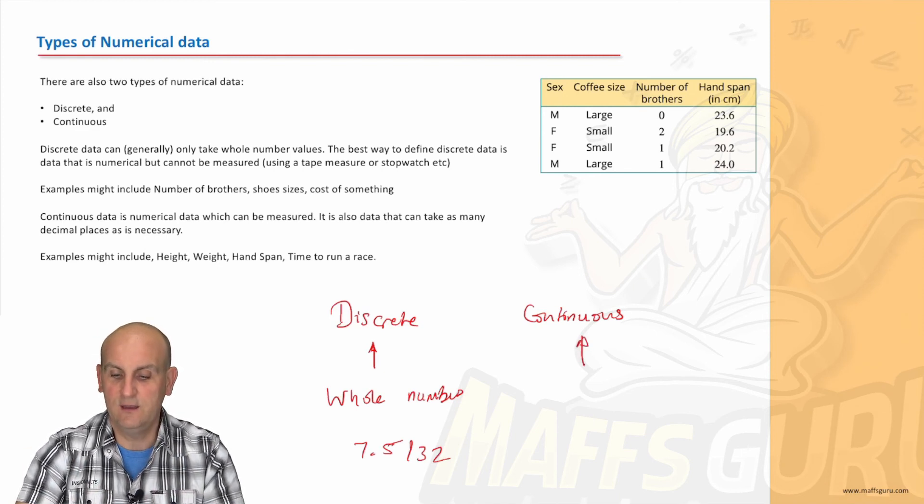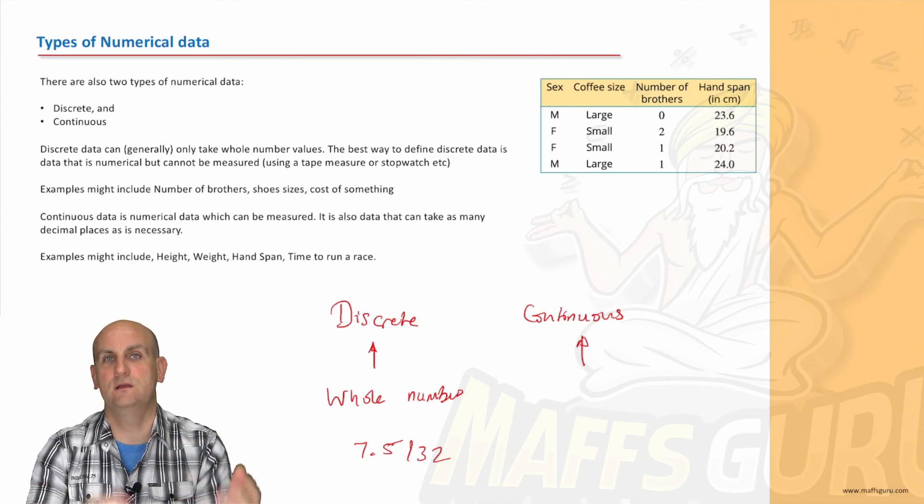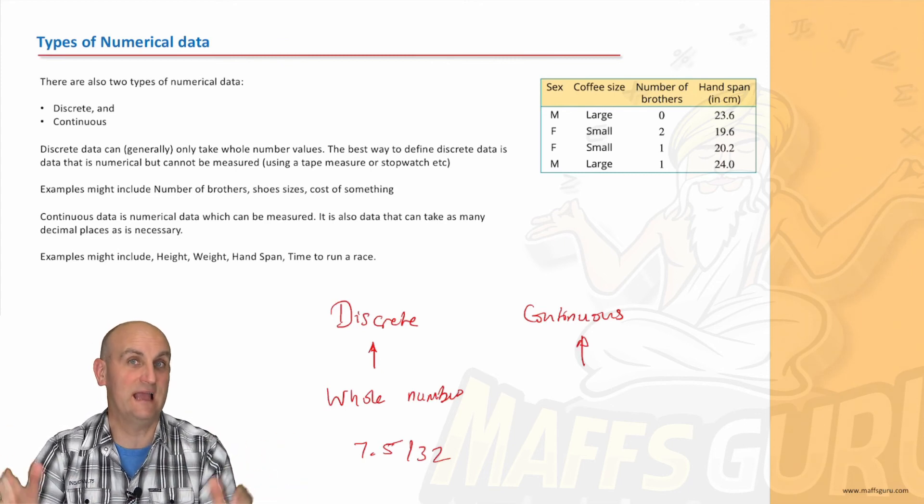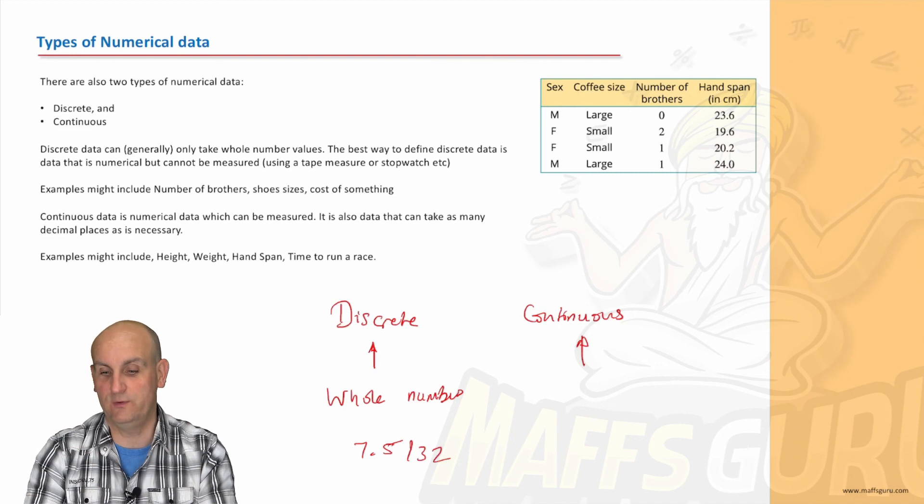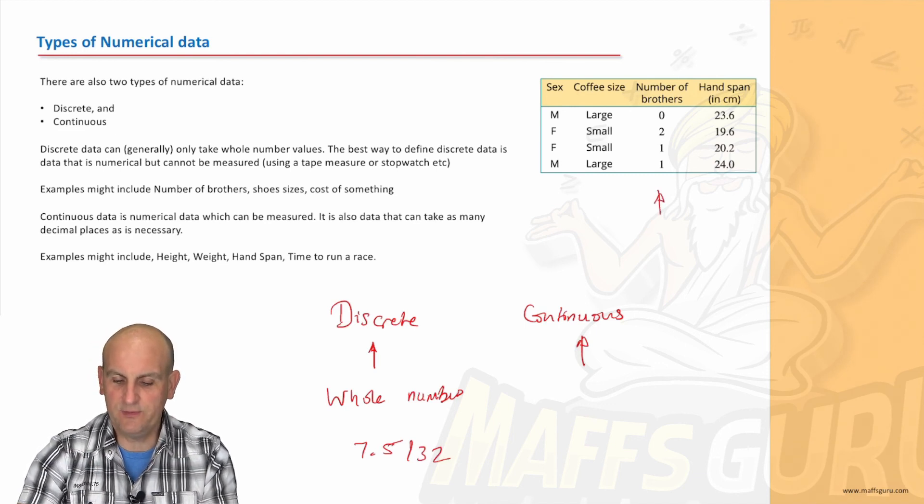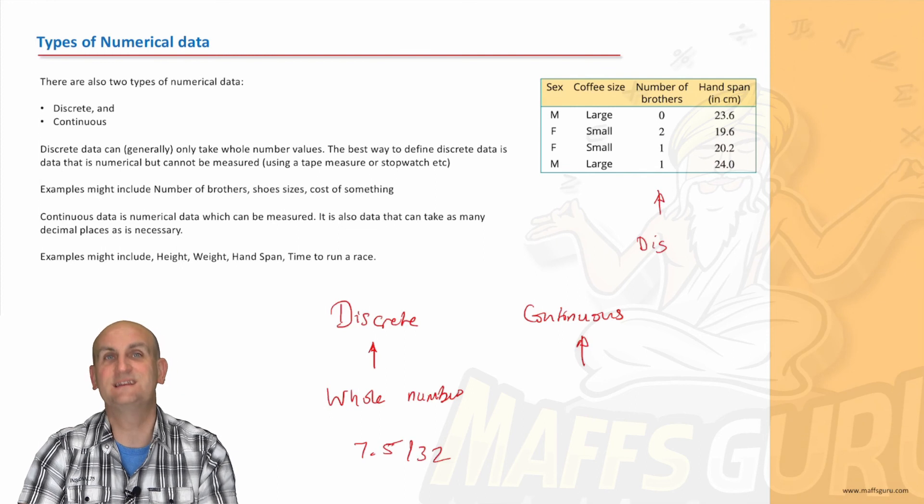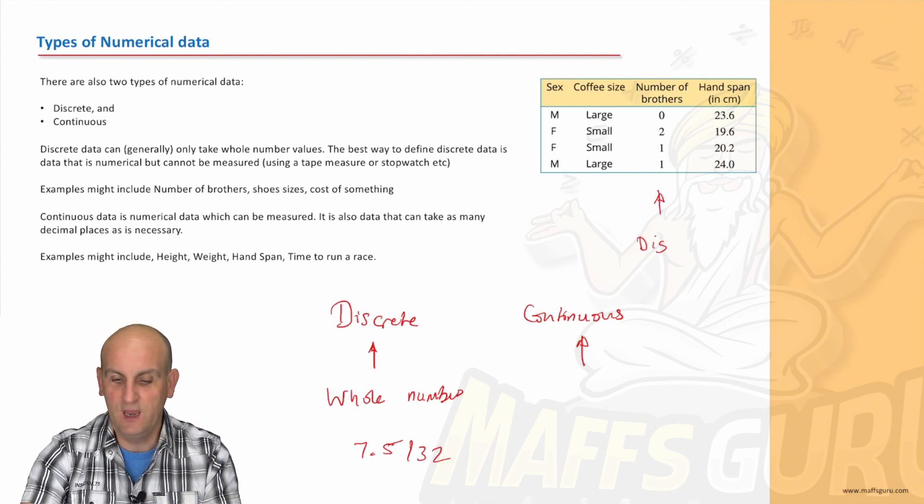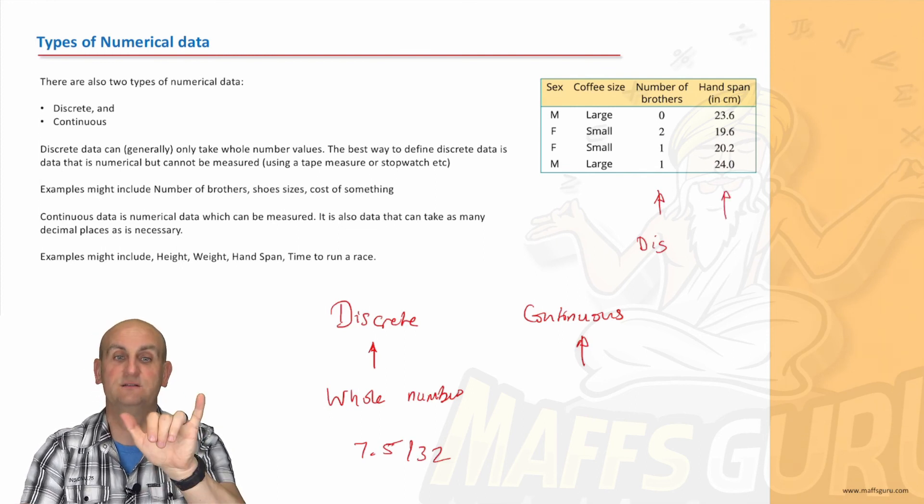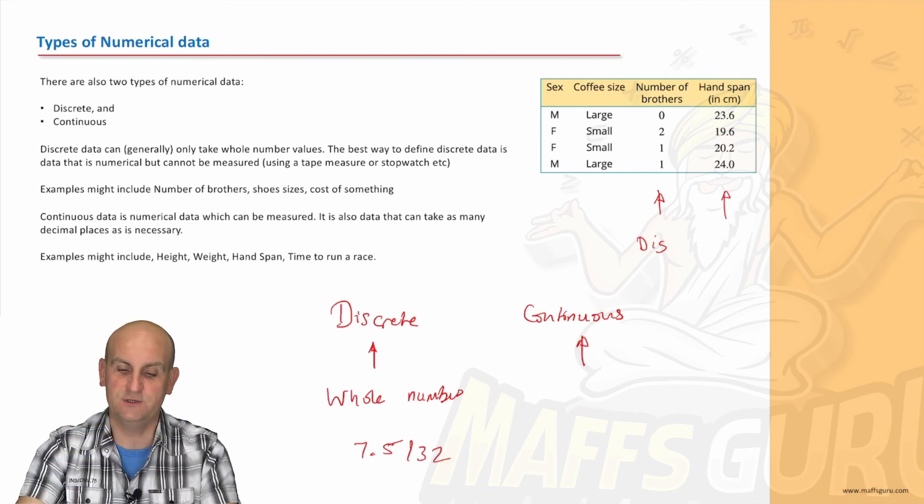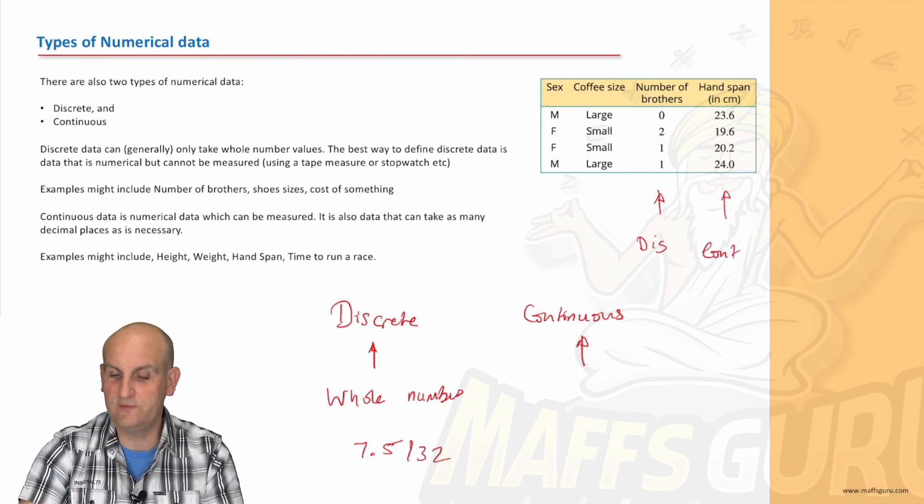Continuous, on the other hand, is the data that can be rounded to a certain or as many decimal points as we can with the equipment that we've got. So in this situation here, number of brothers would be discrete data. Why? Because again, you can't have a decimal number of brothers. But your hand span, which is effectively a width or something that can be measured, would be continuous data.